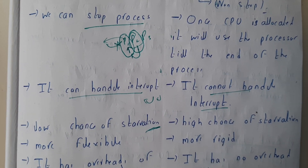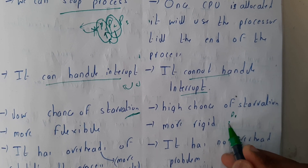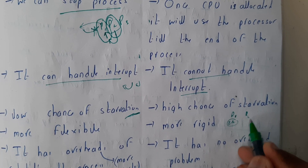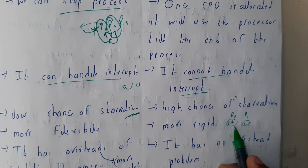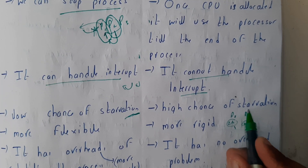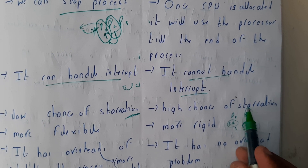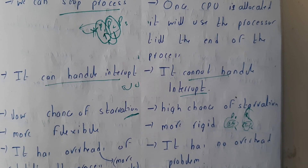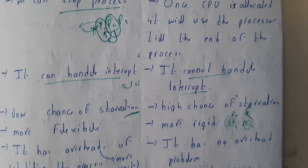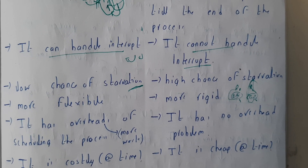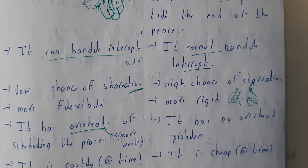In non-preemptive, until the first process is done the next must wait. For example, if process P1 takes 20 hours to complete and P2 takes only 10 seconds — in preemptive, P1 will stop, P2 will be given an option, P2 completes, and P1 continues. In non-preemptive, P2 must wait for 20 hours — that is starvation.